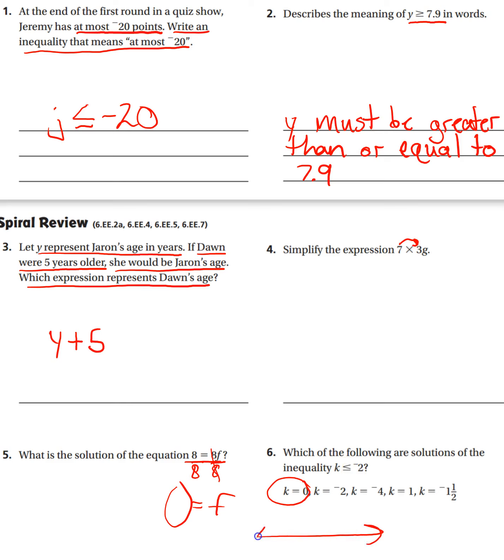Well, on a number line, if we have 0 here, this would be negative 1, this would be negative 2. So 0 would be further to the right, so 0 would actually be greater than, not less than. So that would not be a solution to the inequality.